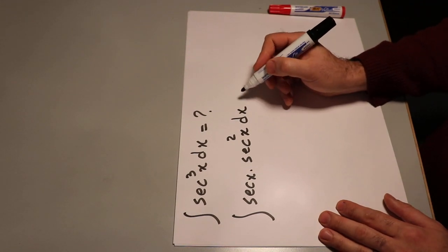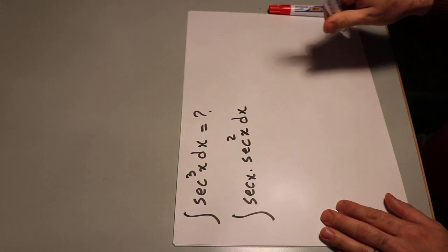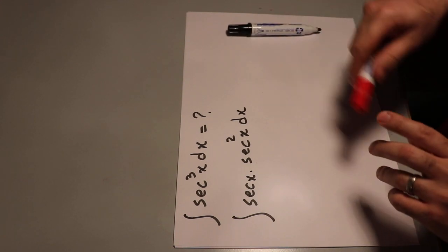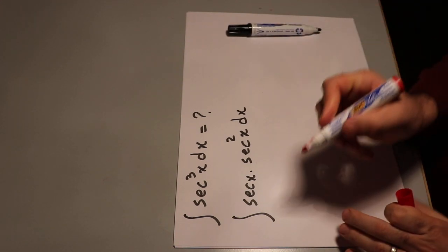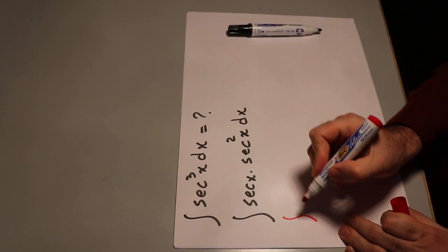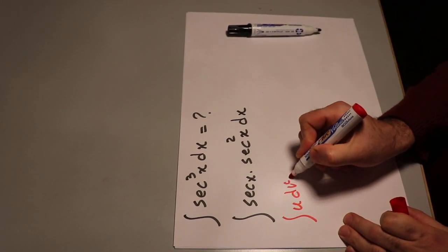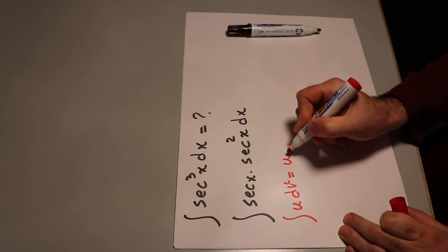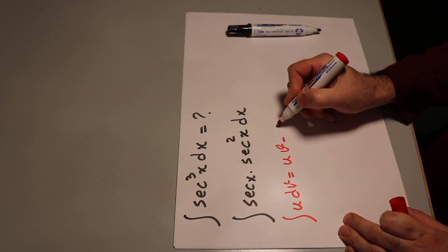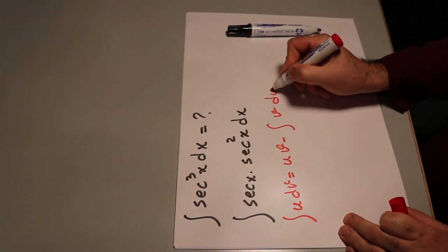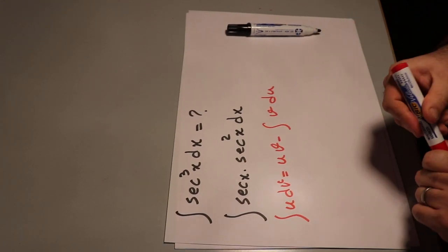To solve this integral you need to use the formula for integration by parts, which is: integral of u dv is equal to uv minus integral of v du.